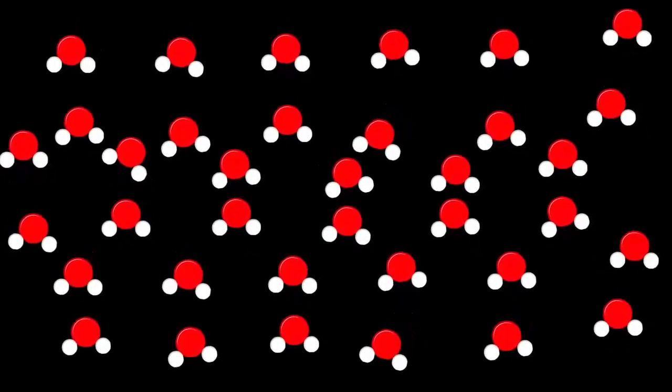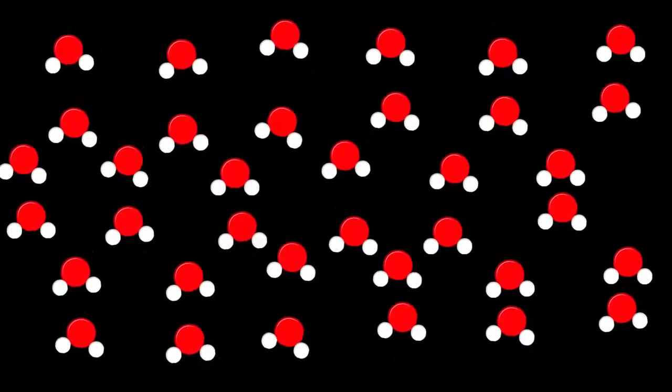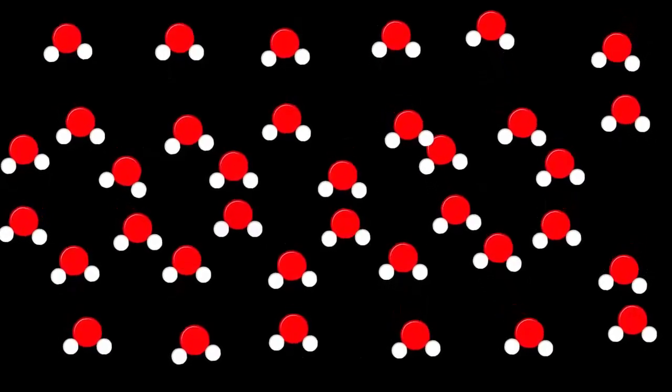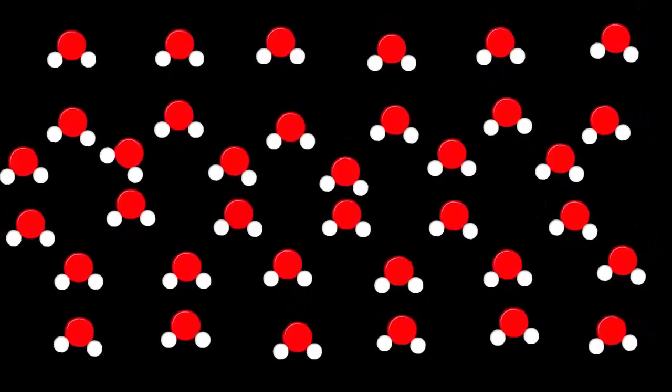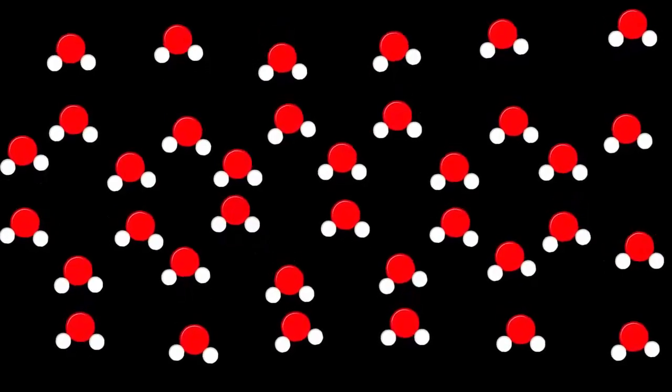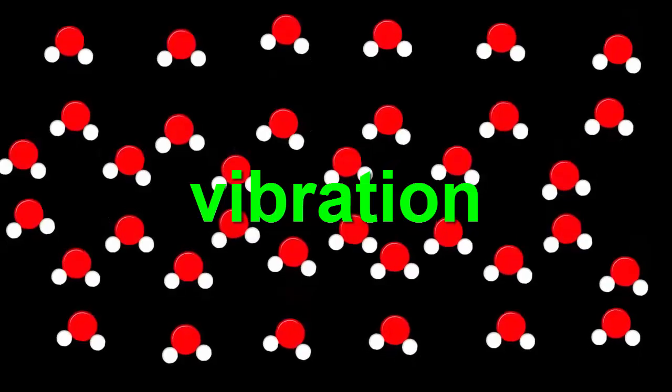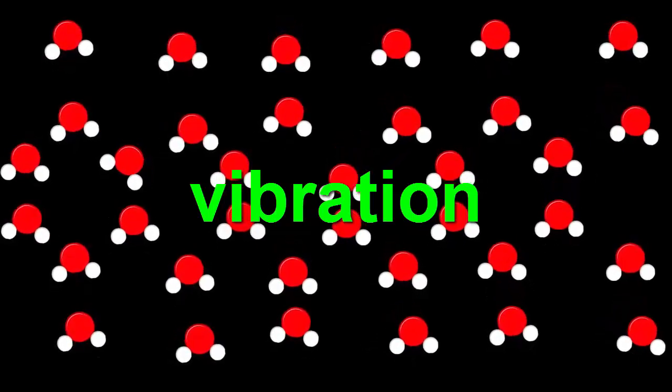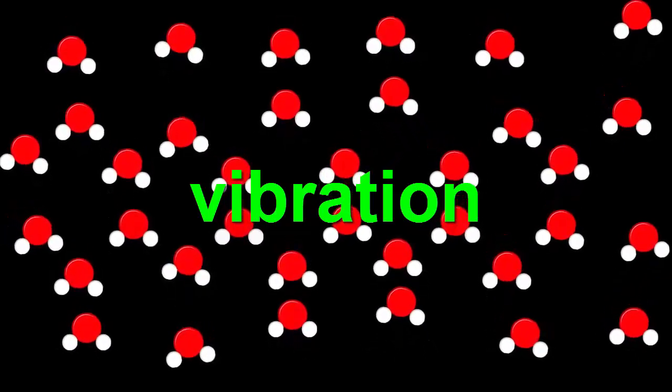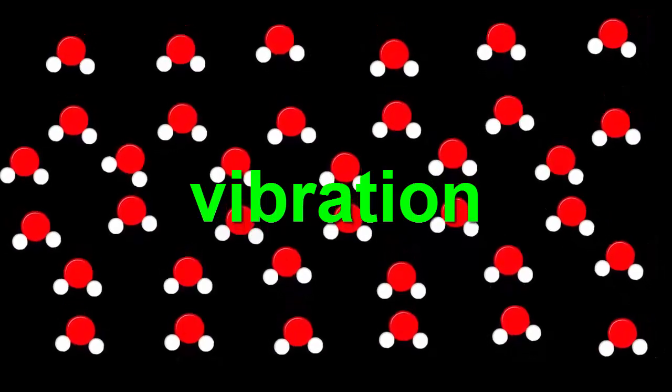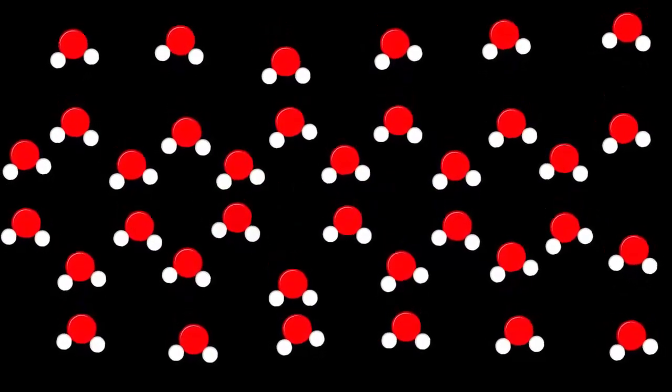And they're stuck in one place. They're still moving but each molecule is moving slowly backwards and forwards around the same point. This is called vibration and it keeps the molecules next to their neighbors. This means that the overall shape is fixed so ice is rigid. It keeps its shape.